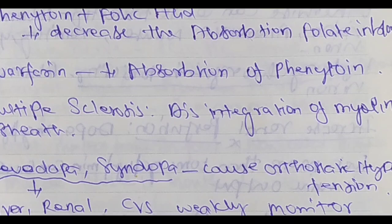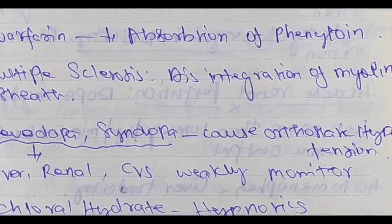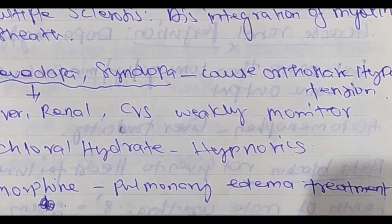Warfarin decreases absorption of phenytoin — note this. Gum swelling is a side effect of phenytoin. Multiple sclerosis involves disintegration of the myelin sheath, affecting the nervous system.